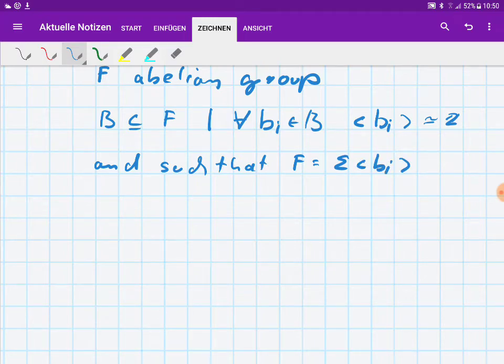This is the definition of a free abelian group. So let's see what the elements look like.